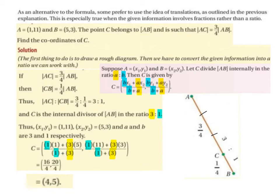b times y1, so 1 times 11. Plus a times y2, so 3 times 3. And all of that's divided by b plus a, so 1 plus 3.